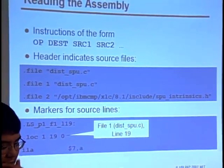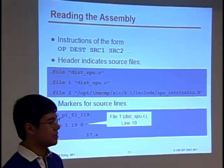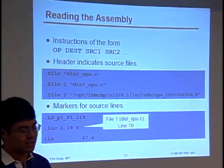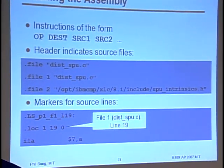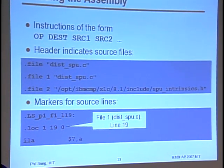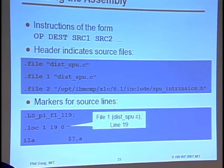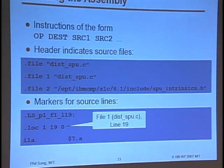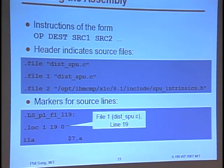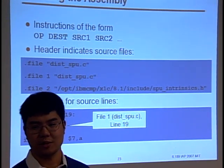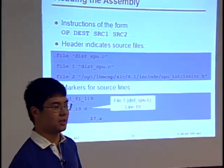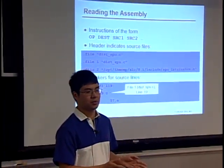When you're looking at the assembly, you're going to see lots of lines of the form: op, destination, and then the source registers. When you're trying to figure out dependencies, it's helpful to look at each line of the assembly and figure out what registers that line is reading from and what registers that line is writing to. There's also information in the assembly file that tells you, for each chunk of assembly, what the corresponding source file line is.